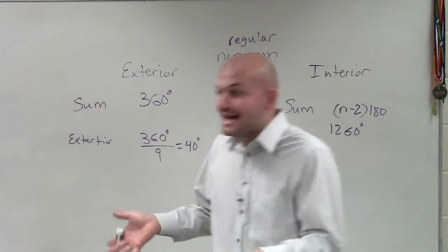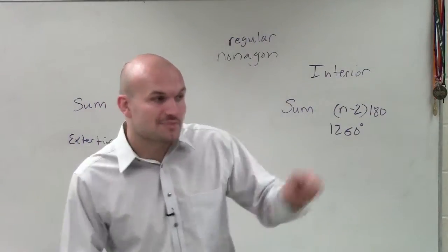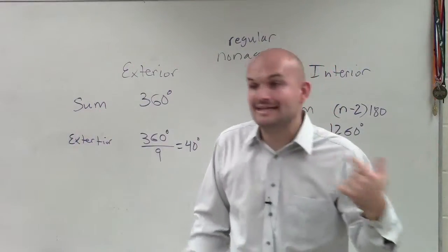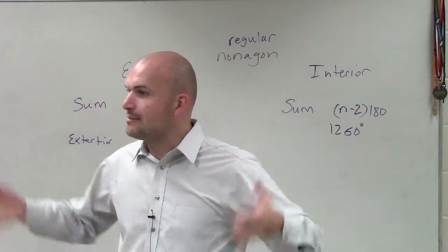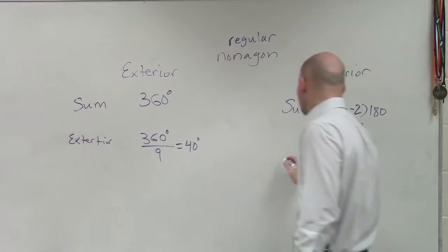However, it's a regular nonagon. That means each of those angles are all the same. So if I just want to find the measure of one of them, I need to break up the sum into how many angles I have. So how many angles do I have in a nonagon? Nine. So to find the interior,